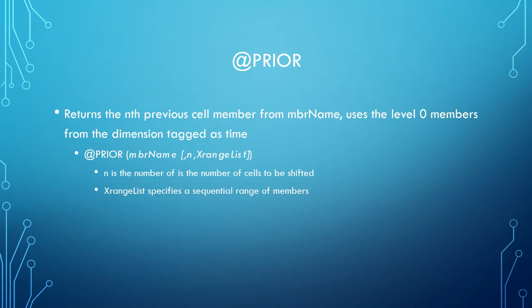Now we have @PRIOR. @PRIOR returns the nth previous cell member from member name and it uses the level zero members from the dimension tagged as time. If we use @PRIOR, the syntax would be member name and then you'd have the n which is optional. All the n and x range list are both optional, and the n is the amount of cells that will be shifting.